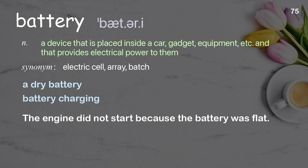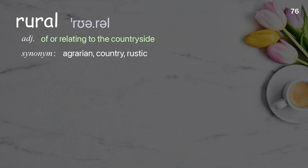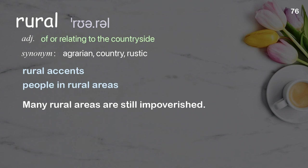Rural: of or relating to the countryside. Examples: rural accents, people in rural areas. Many rural areas are still impoverished.